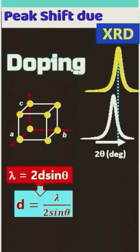How XRD peaks shift due to doping. Doping means when we add some external foreign atoms into the host lattice.